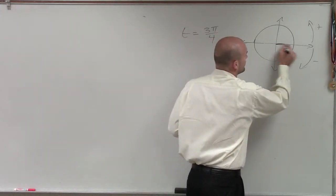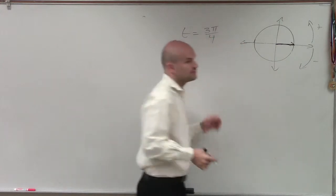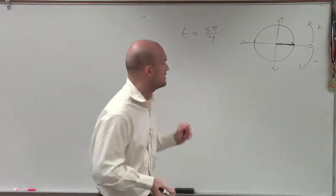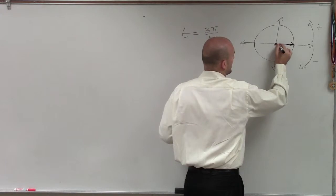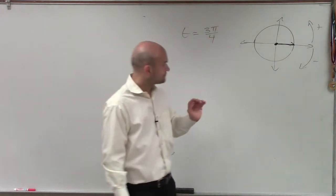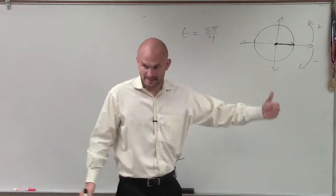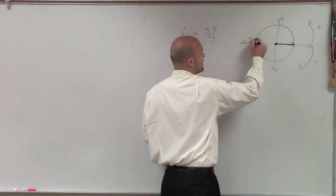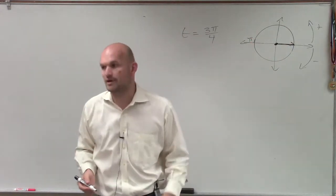We always start with our initial side, and what we're going to do is rotate rays from that initial side about our vertex, which is at the origin. Now, we've talked about a radian — there's pi radians halfway across the circle.